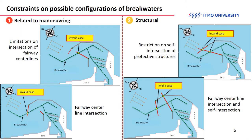It should be noted that using only additional objectives for the breakwater optimization problem is not enough in many cases. The rest should be strict constraints that allow removing inappropriate solutions in early steps. For example, there is a limitation on intersection of fairway centerlines, a restriction on self-intersection between breakwaters — such configurations should be removed before wave simulation starts — and a limitation on intersection with fairways, as shown in the figures.